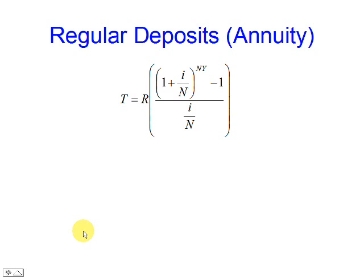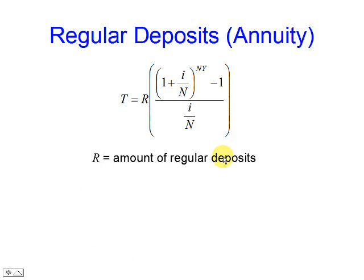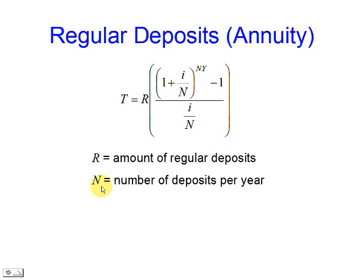This is the formula to be used. R is the amount of regular deposits. N is the number of deposits per year. Y is the number of years.